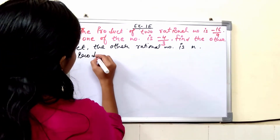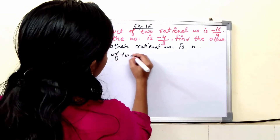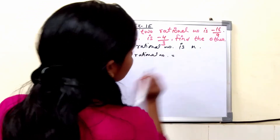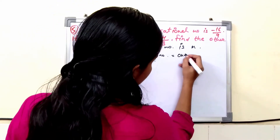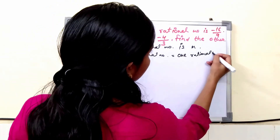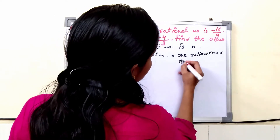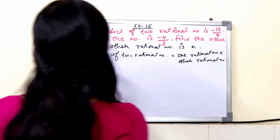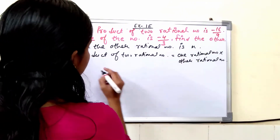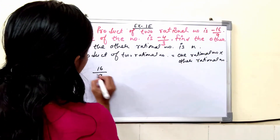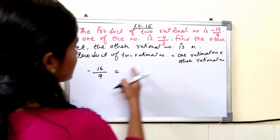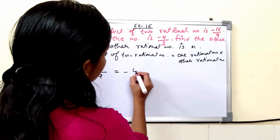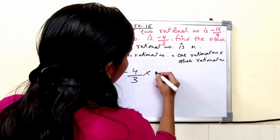The product of two rational numbers equals one rational number multiplied by the other rational number. The product given is minus 16 upon 9. One rational number given is minus 4 upon 3. The other rational number is to be found.